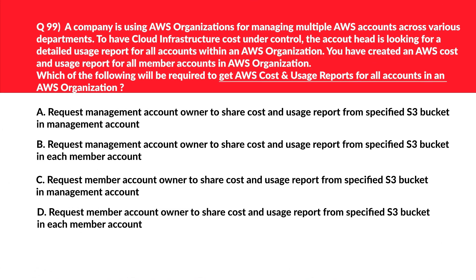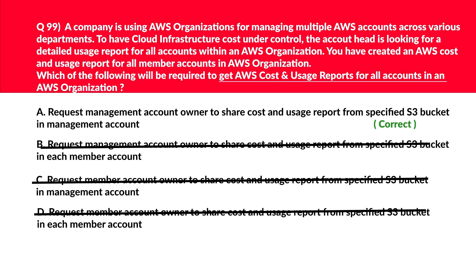This question is about AWS Organizations — an important topic related to billing and cost. Option B says request the management account owner to share cost and usage reports from a specified S3 bucket in each member account. Cost and usage reports are saved in the S3 bucket belonging to the management account, not member accounts — incorrect. Option C says request the member account owner to share cost and usage reports from the management account — only the management account can share such reports, so this is incorrect. Option D says request a member account owner to share reports from each member account — member accounts cannot share cost and usage reports to other member accounts. We'll lock A: request management account owner to share cost and usage report from the specified S3 bucket in the management account as the correct answer.